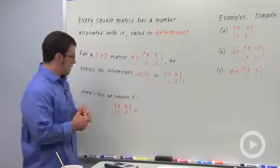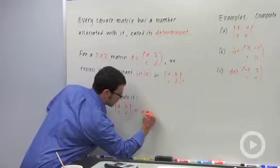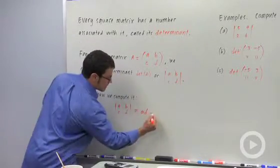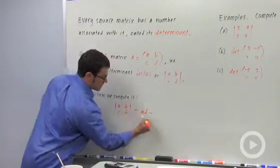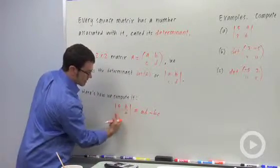And here's how we compute it. We multiply diagonally A times D minus B times C. So this diagonal minus this diagonal.